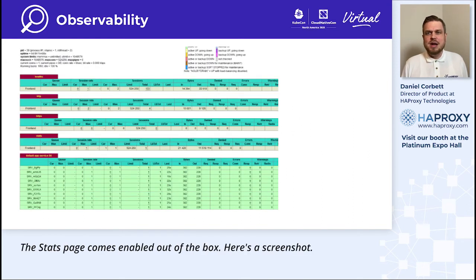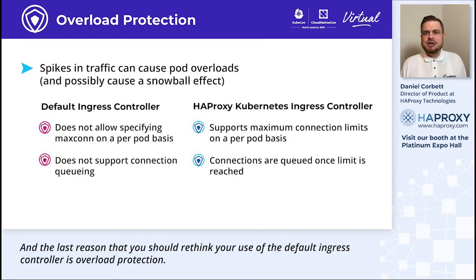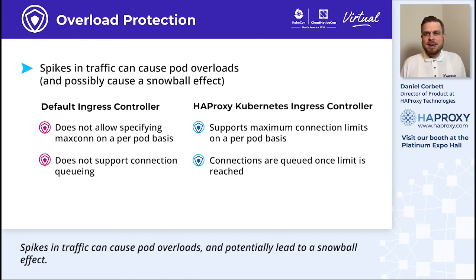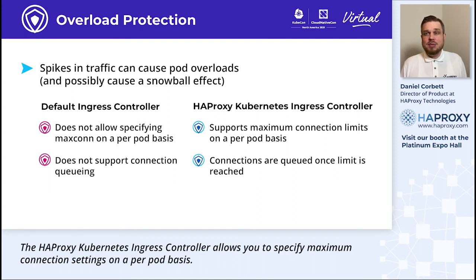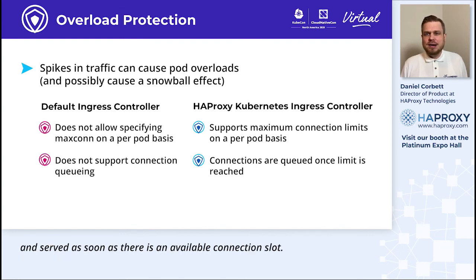The stats page comes enabled out of the box — here's a screenshot. The last reason to rethink your use of the default ingress controller is overload protection. Spikes in traffic can cause pod overloads and potentially lead to a snowball effect. The HAProxy Kubernetes ingress controller allows you to specify maximum connection settings on a per-pod basis. When the maximum connection limit is reached, new connections are placed into a queue and served as soon as there's an available connection slot.